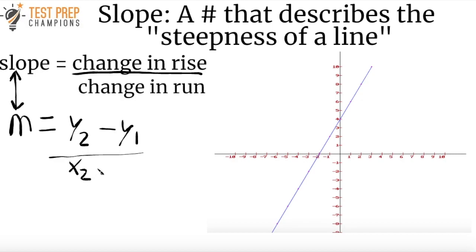This is one of the most important formulas to know for the GED test — or at least know how to use it, because you don't have to memorize it. The slope — again, M means slope — is equal to y2 minus y1 over x2 minus x1. Remember how we said the y-axis is the rise? So y2 minus y1 is the change in the rise, and x2 minus x1 is the change in the run.